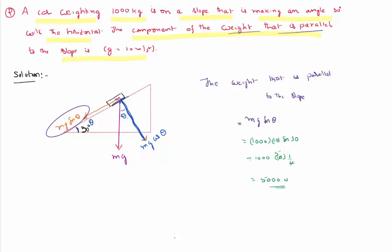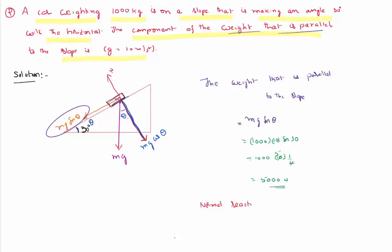If you notice, mg applies a force on the inclined plane in the downward direction — that is the action. The inclined plane applies the reaction on the body in the upward direction, which is called the normal reaction. If someone asks for the normal reaction, its value is mg cos theta. With m = 1000 and g = 10, cos 30 = √3/2, so the normal reaction is 5000√3 Newtons.